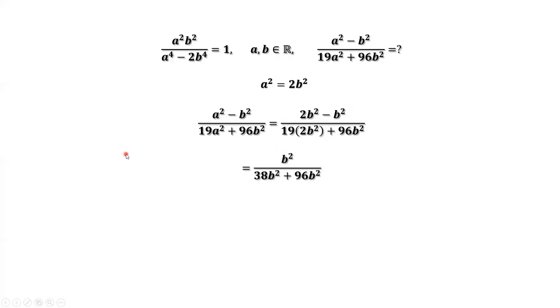Continue to simplify. We have the numerator and the denominator. Numerator is b squared. Denominator is 38b squared plus 96b squared.